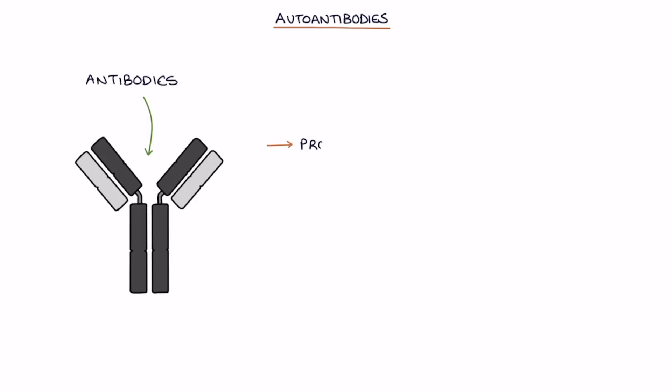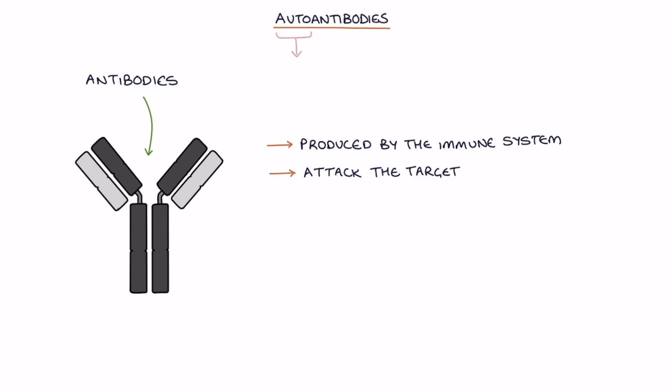Next let's talk about autoantibodies. Antibodies are produced by the immune system and cause the immune system to attack whatever the target is for that antibody. Autoantibodies are where antibodies target the body's own tissues.